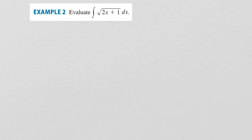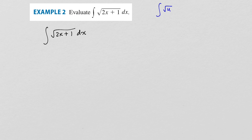Another example: the integral of the square root of 2x plus one. You might think substitution isn't needed, but the only square root we know how to integrate directly is the square root of a single variable. We have the square root of 2x plus one, so I'll make the substitution u equals 2x plus one. Then du is the derivative of 2x plus one, which is 2, multiplied by dx.